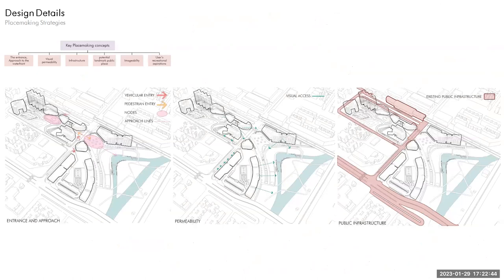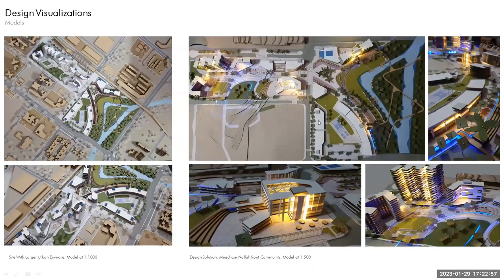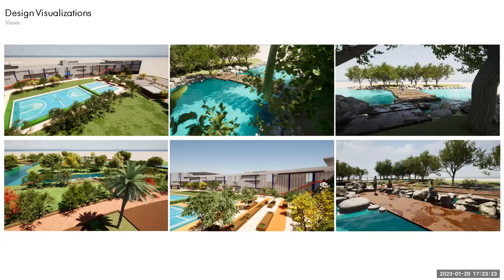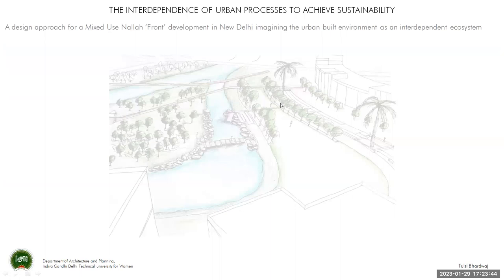The placemaking strategies integrate people's perception of a space and identify it as a place. The project was finally concluded with both physical and digital visualizations. The physical model was originally developed at 1:1000 scale for the larger context, and the design solution was visualized at 1:500 scale with various lighting types. The final site views establish that such sustainable urban spaces can potentially be achieved if we perceive the urban built environment as part of a larger ecosystem, understanding anthropogenic processes as interdependencies to realize the potential of our rivers and lands.